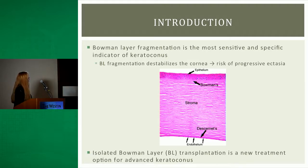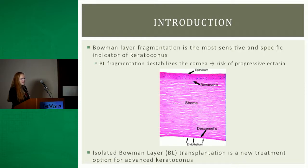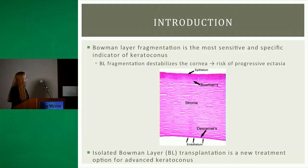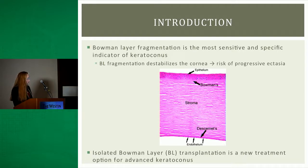When Bowman's layer becomes fragmented, it destabilizes the cornea and can lead to a risk of progressive ectasia. In 2014, Dr. Garrett Mellis and his team invented a new surgery — isolated Bowman layer transplantation — which could potentially be a new option for patients with advanced keratoconus.